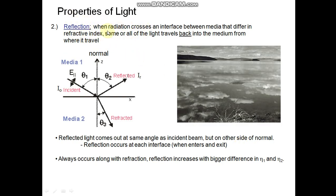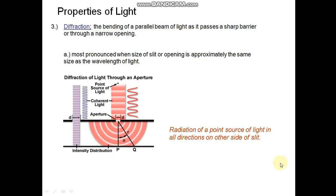Properties of light. Reflection: When radiation crosses an interface between mediums that differ in refractive index, some or all of light travel back into the medium from where it travels. Reflected light comes out at same angle as incident beam but on the other side of normal. Reflection occurs at each interface when enter and exit. Always occurs along with refraction. Reflection increases with bigger difference in refractive index eta1 and eta2.